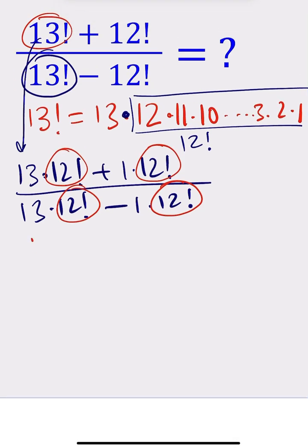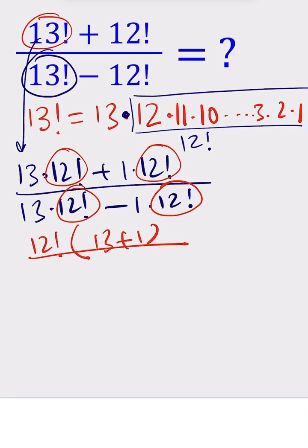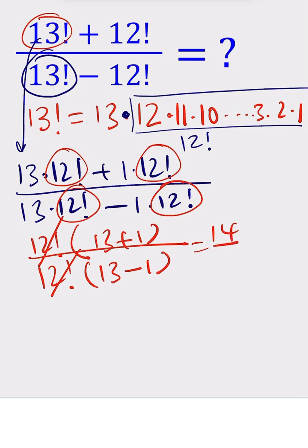When we factor out 12 factorial, on the top we get 12 factorial times 13 plus 1, and on the bottom we get 12 factorial times 13 minus 1. The 12 factorial cancels out. 13 plus 1 is 14, and 13 minus 1 is 12. We can simplify 14 over 12, and the final answer is 7 over 6.